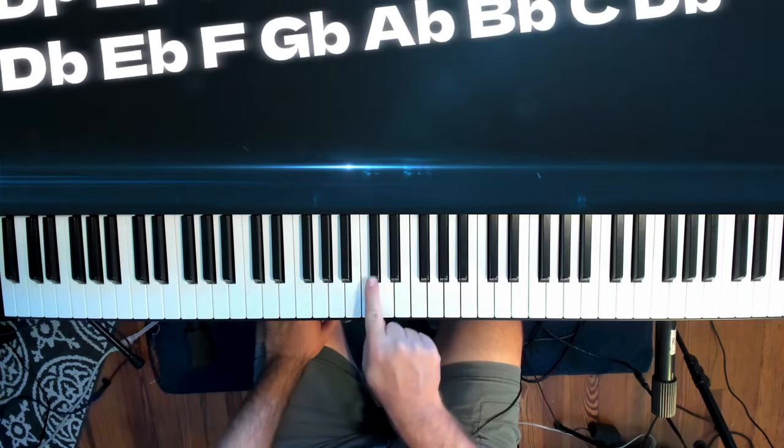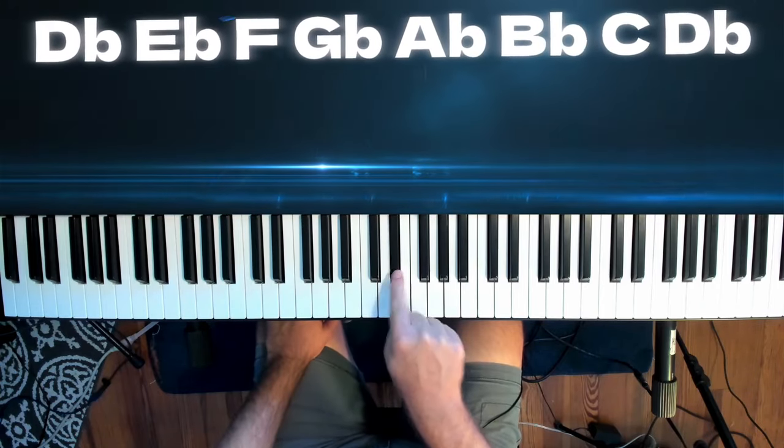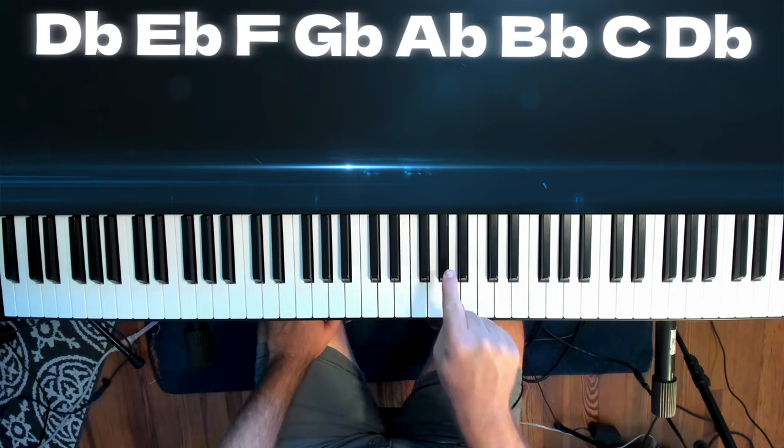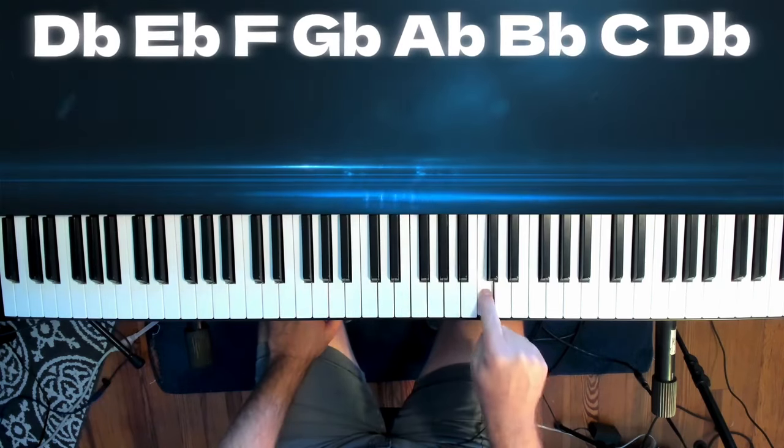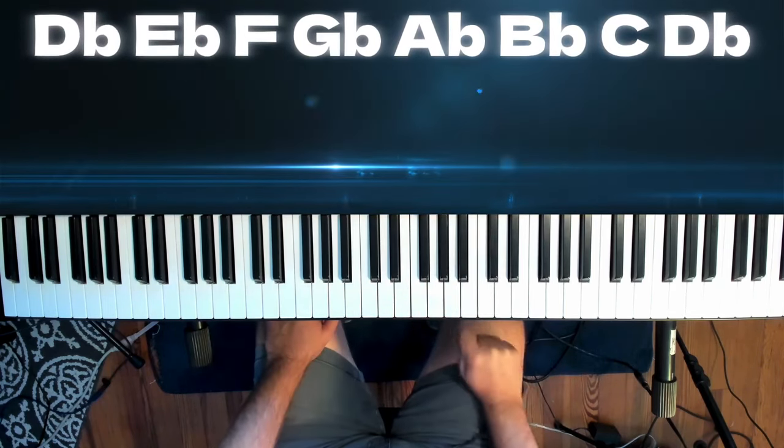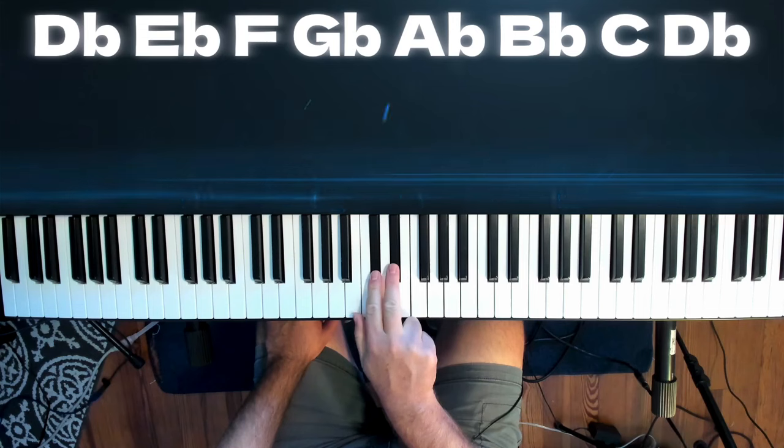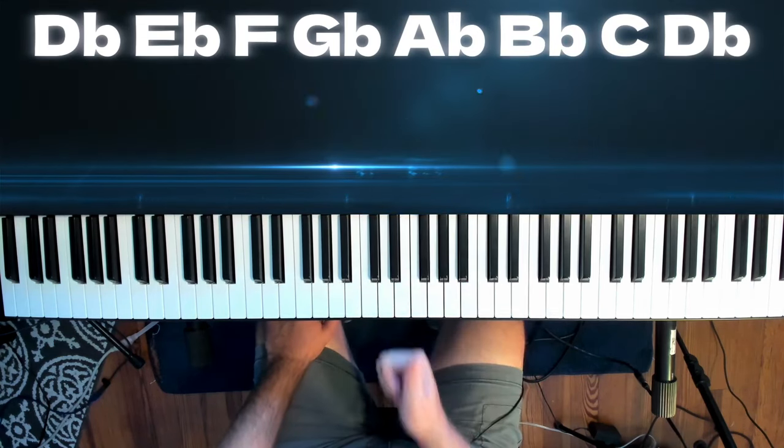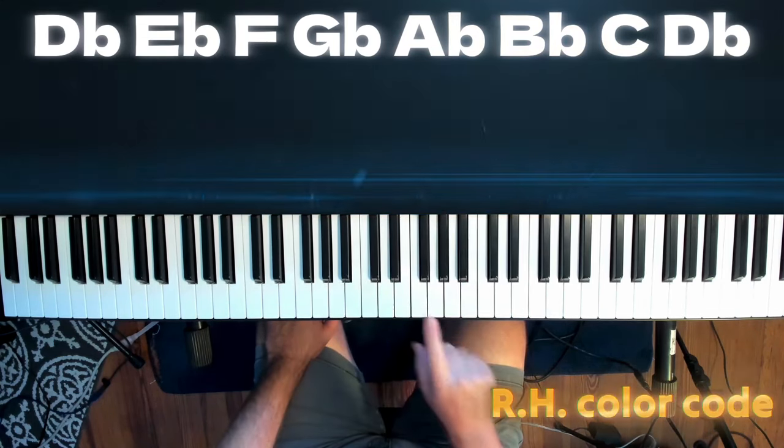All right, so here are the notes in the D-flat major scale: D-flat, E-flat, F, G-flat, A-flat, B-flat, C, D. The shape is 2, 3, and then 2. The thumbs are on the white keys, F and C.